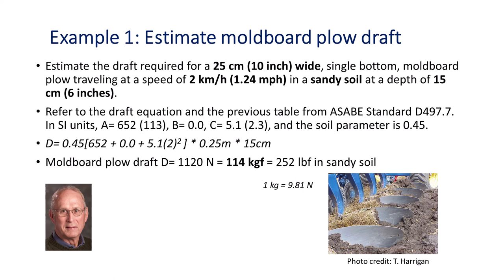Let's use the ASABE tillage draft equation to estimate the draft requirement for a 25-centimeter moldboard plow traveling at 2 kilometers per hour at a depth of 15 centimeters in coarse sandy soil. Referring to the previous tables, parameter A is 652, B is 0, and C is 5.1, and the soil parameter for sandy soils is 0.45. The estimated plow draft is 1,120 newtons or 114 kilograms force.